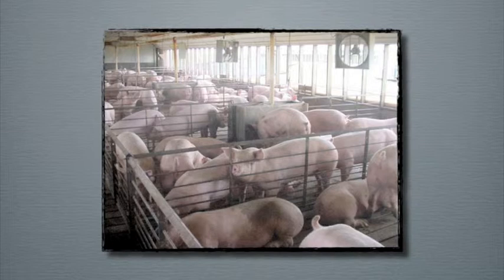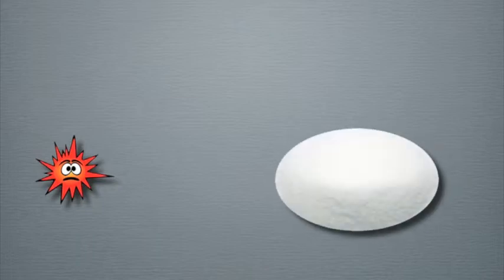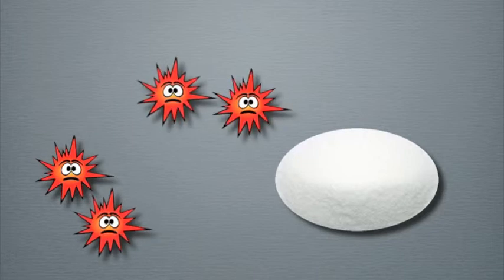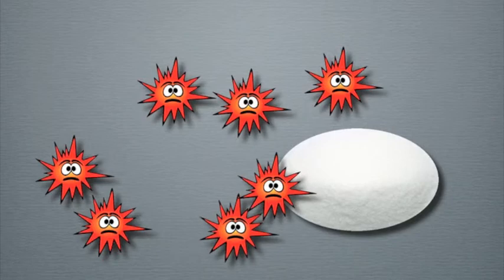So once the good bacteria are dead, the yeasts have lots of space to spread out. Yeasts eat sugar, and industrialized diets have plenty of that, so they chow down and fill the empty spaces. Americans eat an average of 120 pounds of sugar a year.